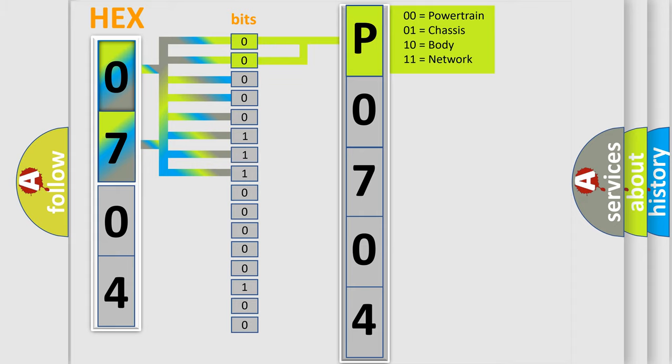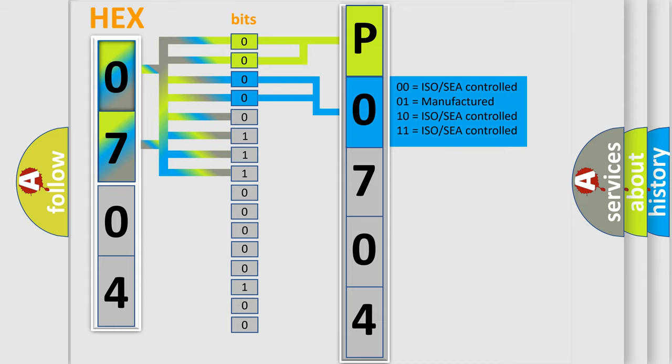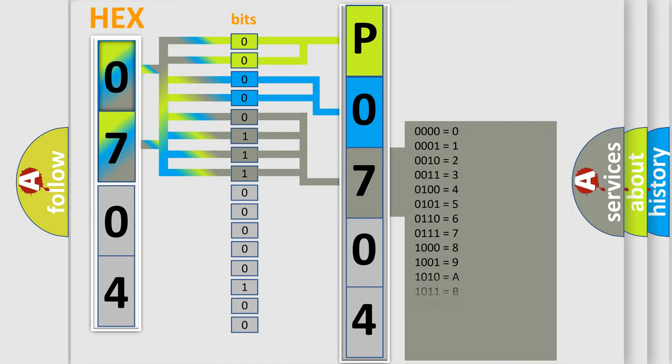By combining the first two bits, the basic character of the error code is expressed. The next two bits again determine the second character. The last bit styles of the first byte define the third character of the code.